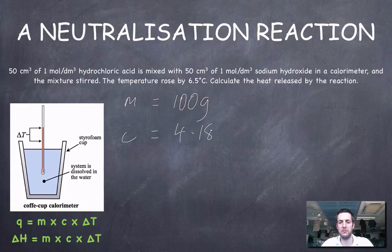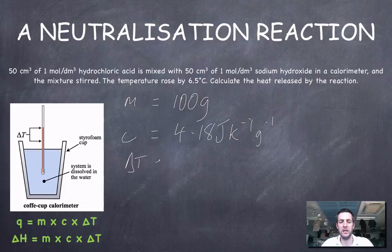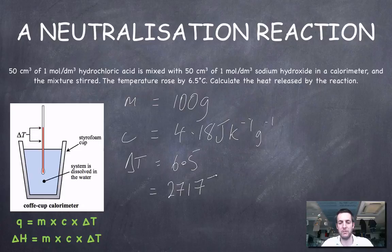The heat capacity of water, as we know, is 4.18 joules per kelvin per gram. And the temperature change, as we're told in the question, is 6.5 kelvin. So Q is equal to those three things multiplied together, and that's 2717 joules.